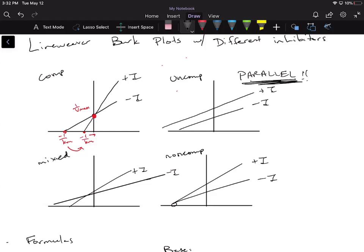But make sure that the lines are exactly parallel for them to be an uncompetitive inhibitor. Same thing for competitive inhibitors, make sure that the Vmax is the same. For non-competitive, make sure that the Km is going to be the same.